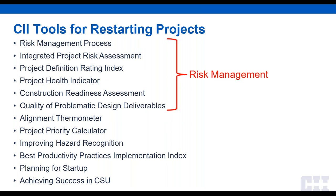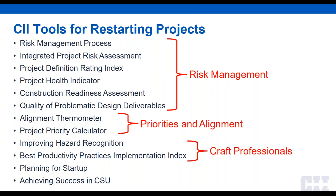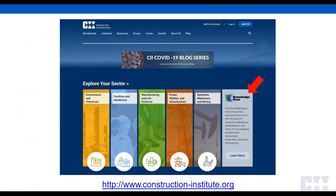The first six practices deal with risk management and various types of assessment checklists. The next two deal with team dynamics — specifically, if we are managing the project in a way to achieve our stated priorities. The next two deal with our craft professionals: one dealing with safety and one dealing with labor productivity. The last two deal with the commissioning and startup phase. Please don't think you have to use all of these — each project situation demands different actions, so the appropriate tools will be different for different situations. You can access all of these from our knowledge base via our website homepage.